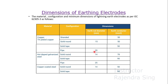If it is a pipe configuration, the earth rod diameter would be 20 mm. For HDG steel: if the configuration is solid round, the earth rod diameter would be 14 mm and the earth conductor would be 78 square mm. For solid tape, the earth conductor shall be 90 square mm. For pipe configuration, 25 mm would be the earth rod diameter requirement.